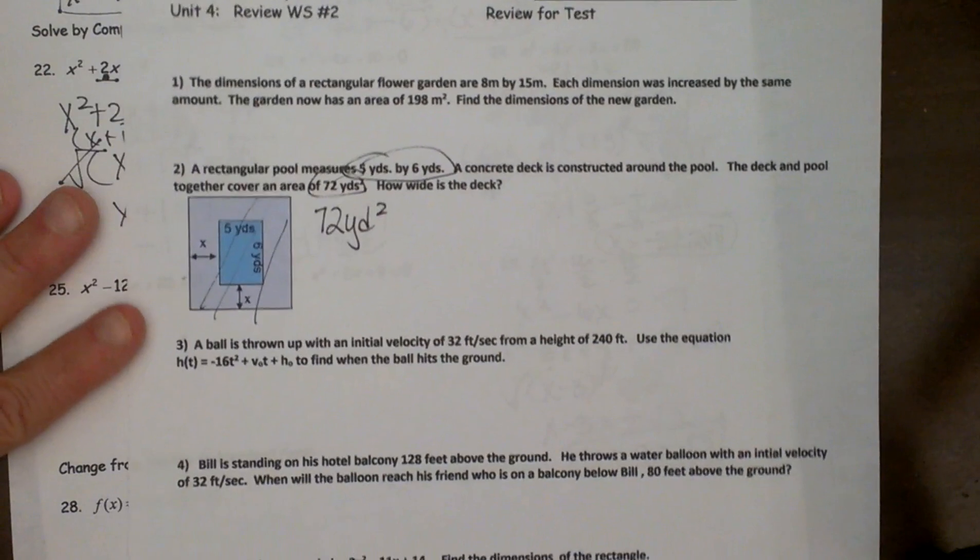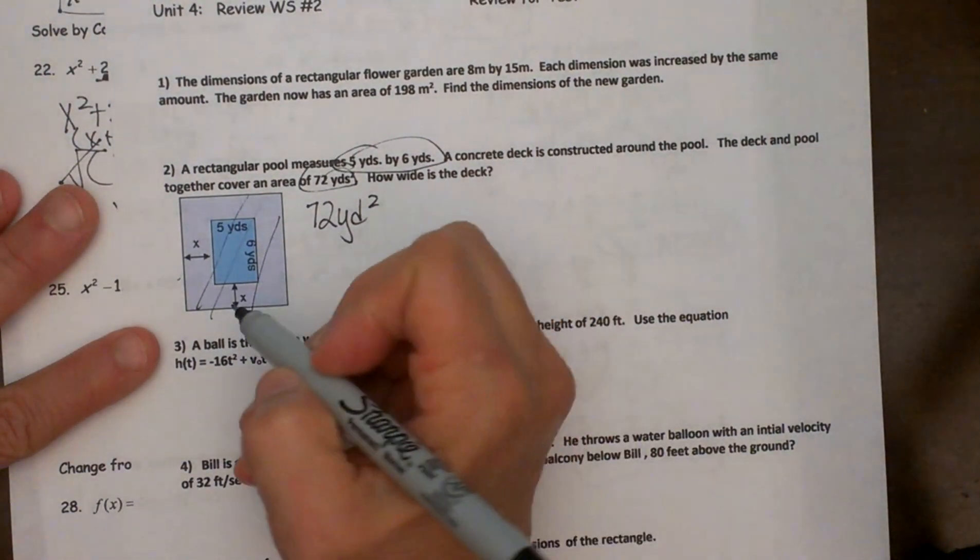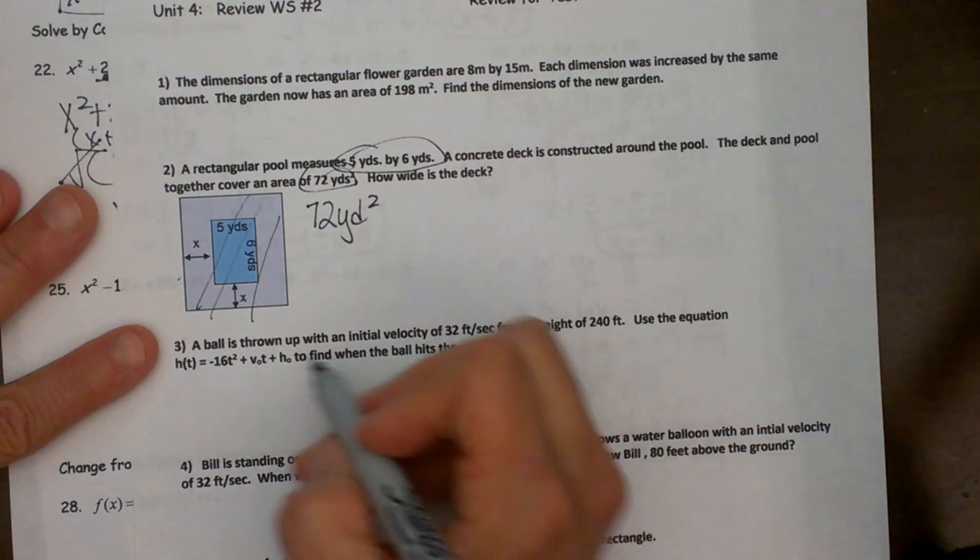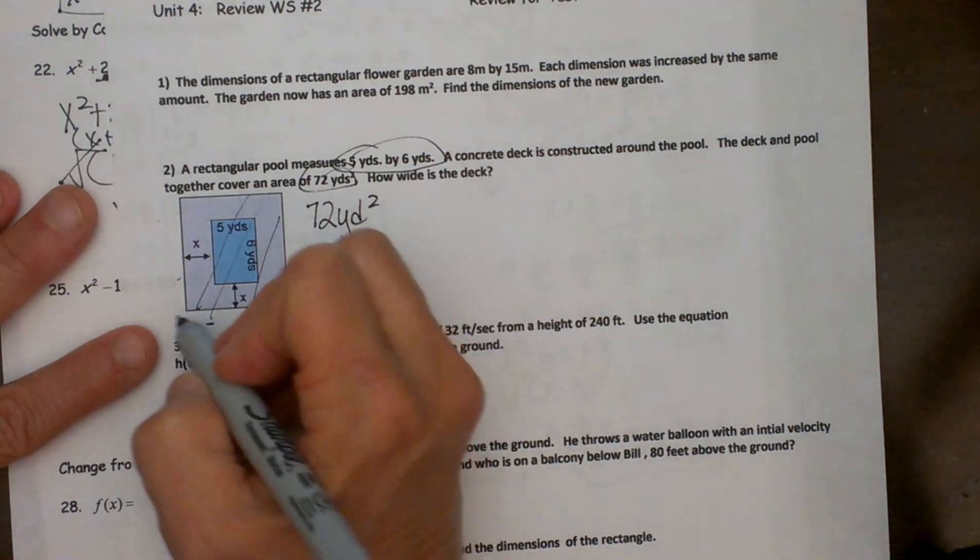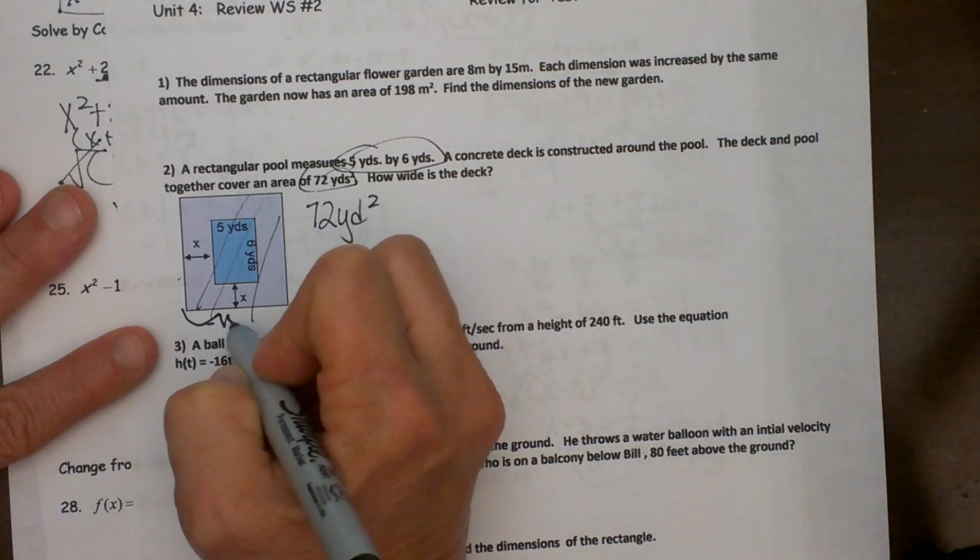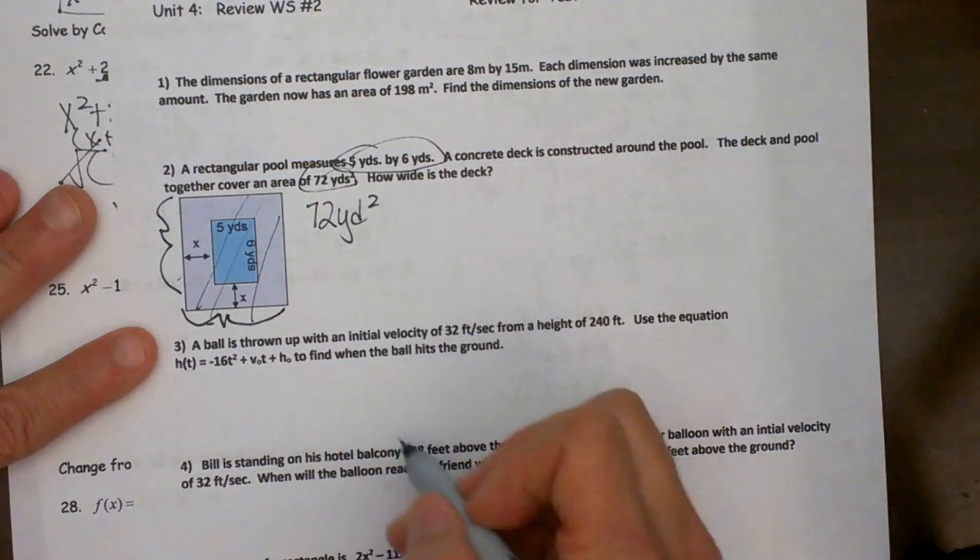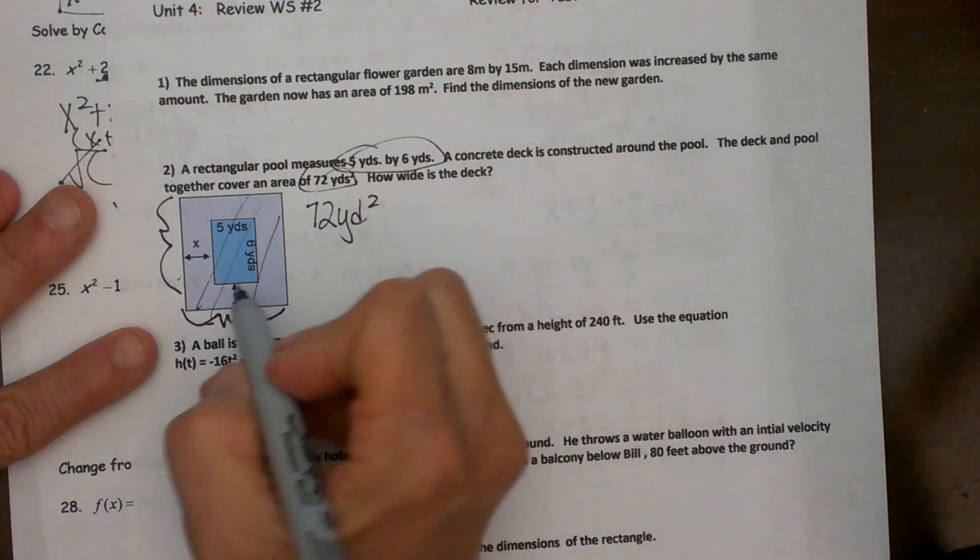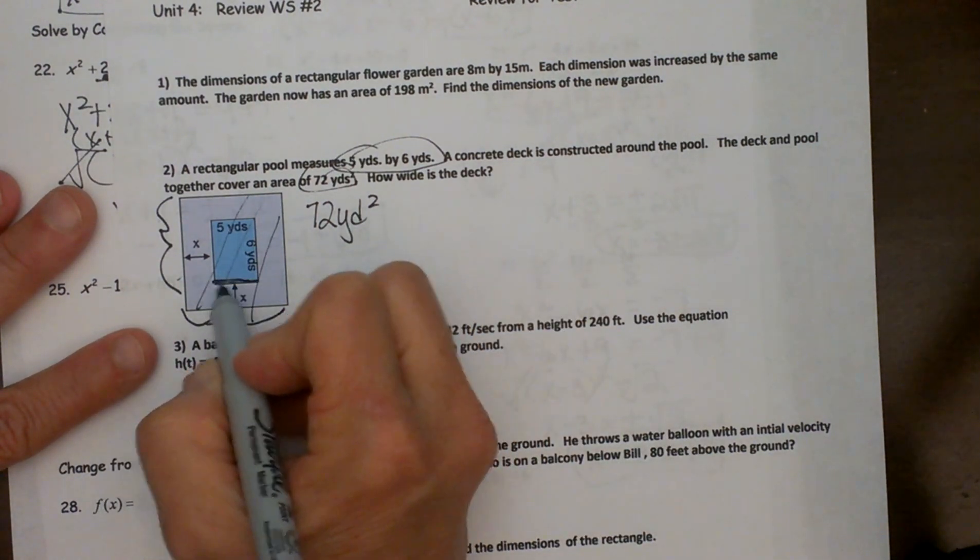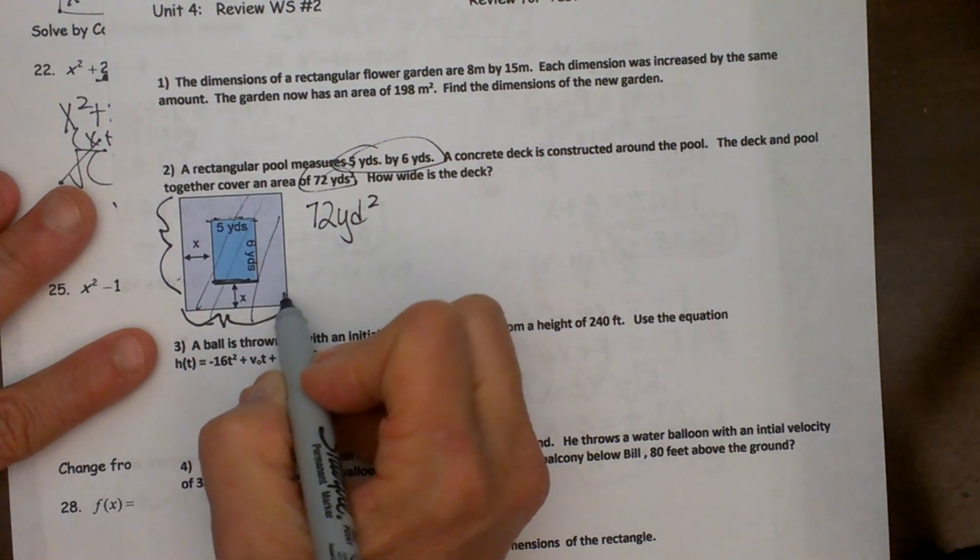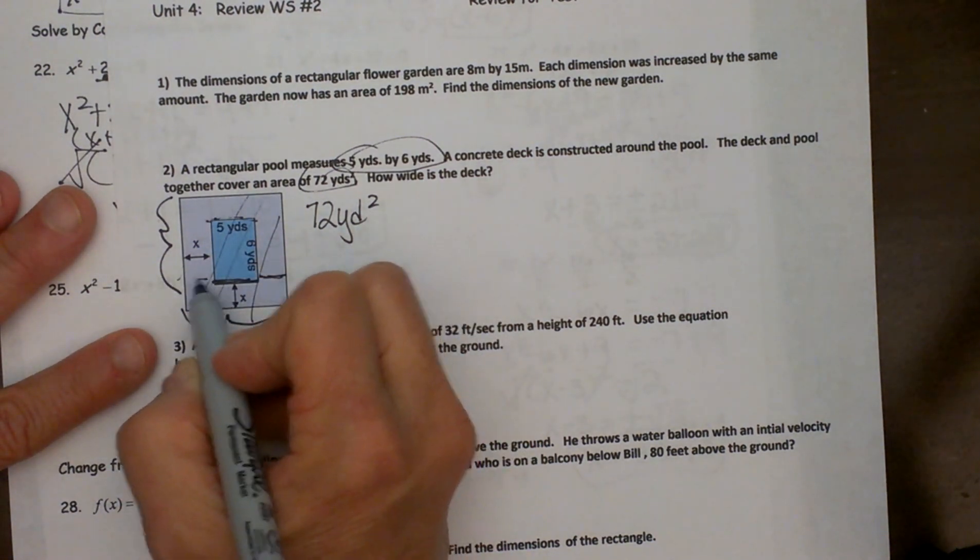How wide is the deck? Well in our picture we have the deck labeled the width of it as x. So what we need to do is get some dimensions for the outside of the pool and the deck together. Because those are the dimensions that create the seventy two square yards. So let's try to figure this out. This distance right here is five because it is parallel to this one. So this one is five and then I am adding the deck to both sides of it.